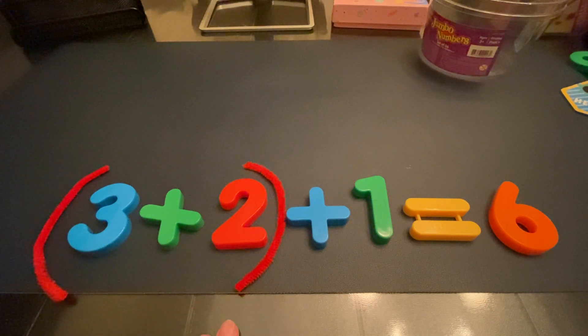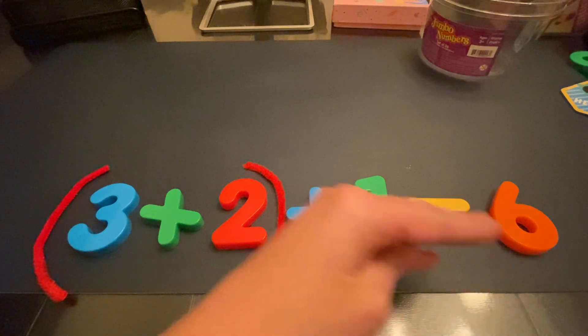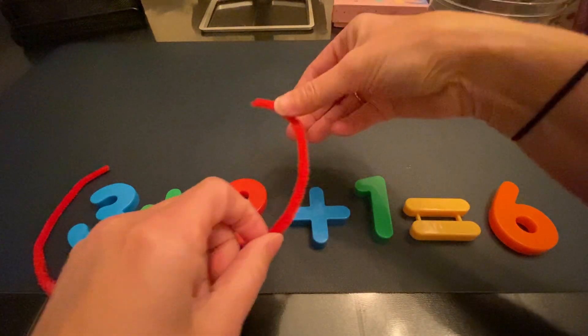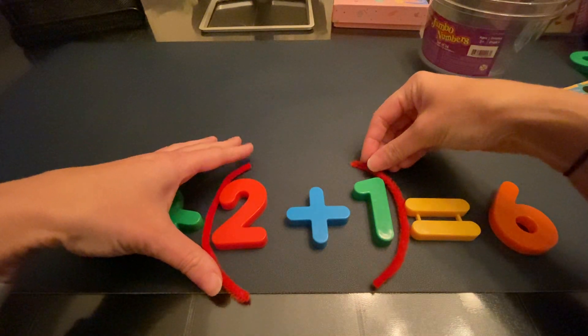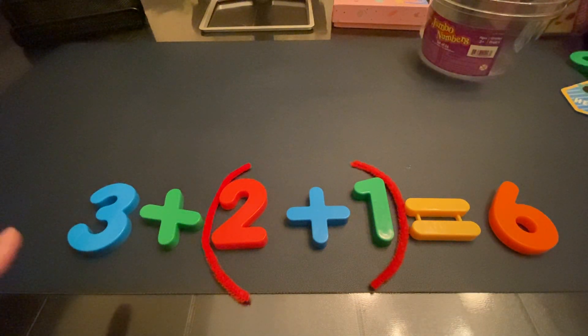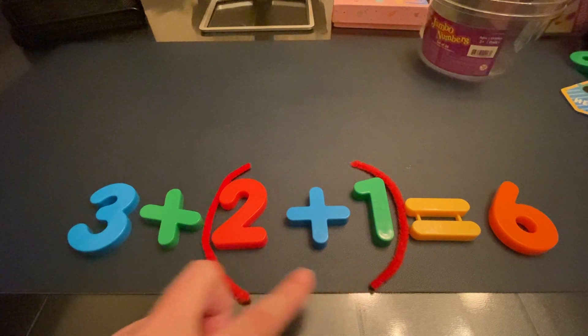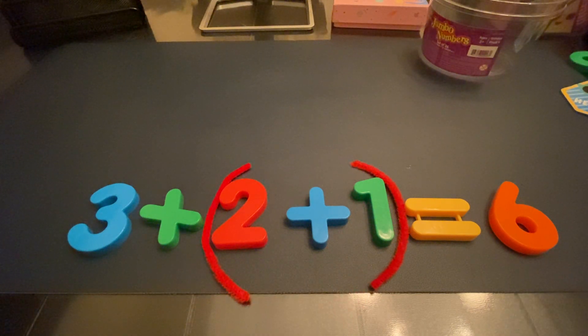So, 3 plus 2 plus 1 is going to equal 6. And also, if you move the parentheses, you put them right there, then 3 plus 2 plus 1 still will also equal 6.